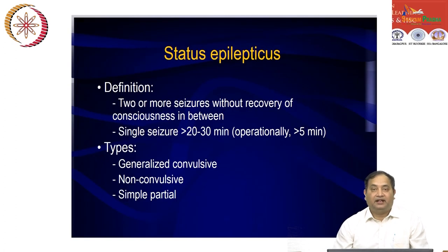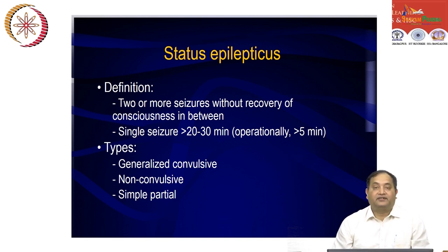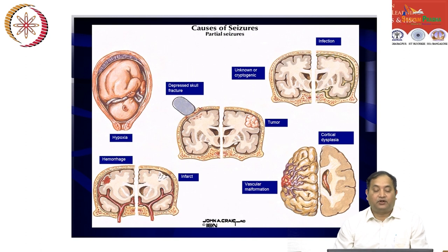Another form is the emergency setup known as status epilepticus. We define it as when a person develops two or more seizures without recovery of consciousness between them, or a single seizure lasting almost 20 to 30 minutes. Status epilepticus can be of types: generalized convulsive, non-convulsive, or simple partial.